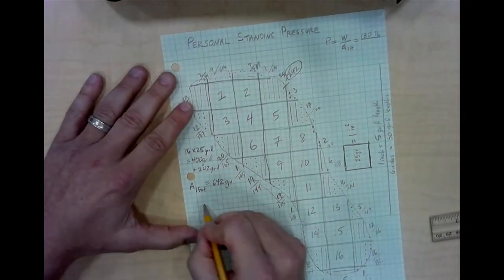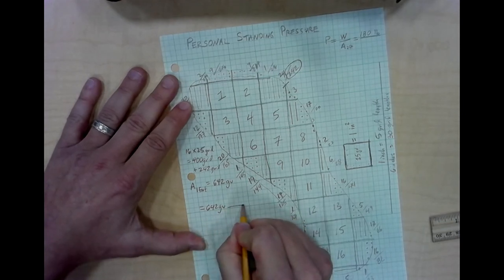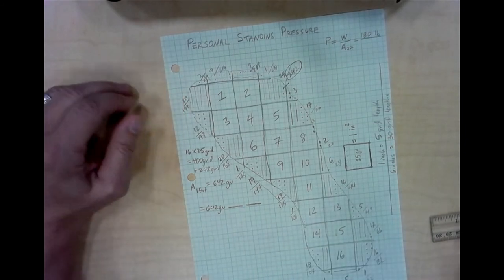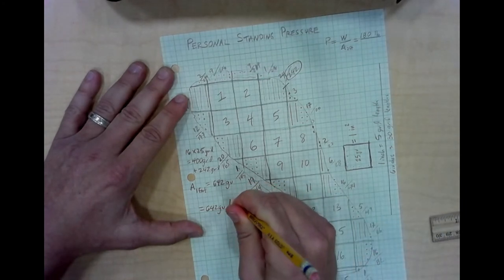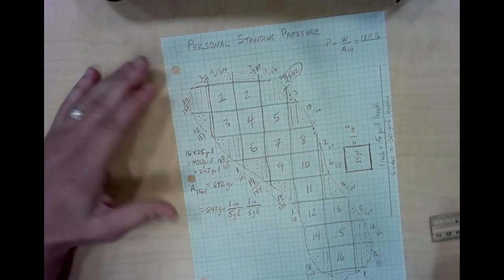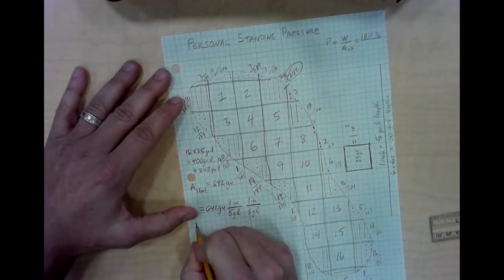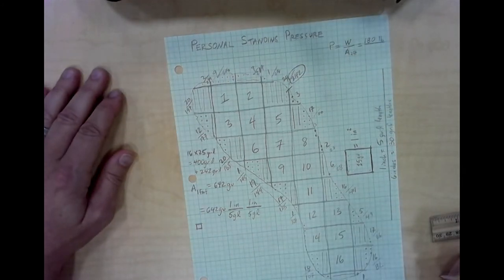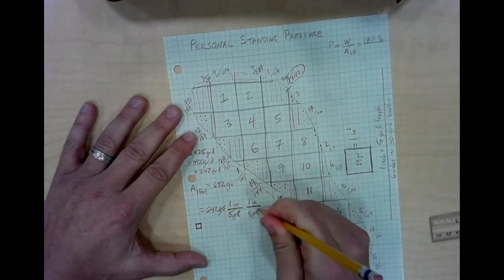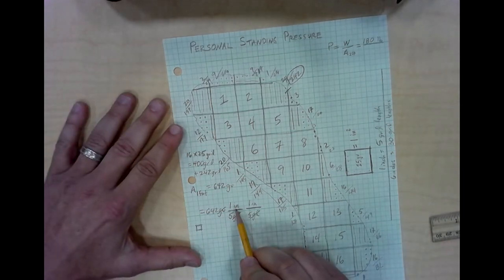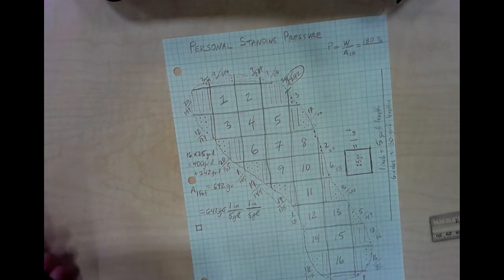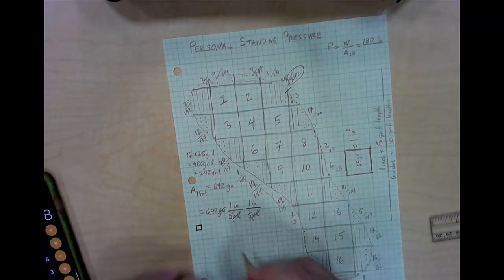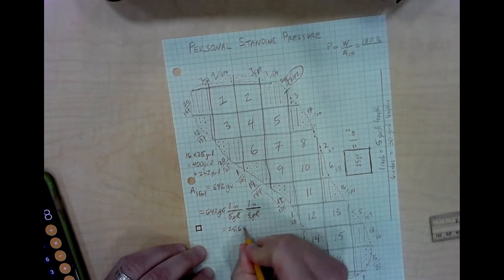So I'll take my area of 1 foot, 642 grid units, and I'm going to go ahead and convert it. I'm going to actually use my two linear conversions and recognize that 5 grid lengths is 1 inch and 5 grid lengths is 1 inch. And recognize that a grid length times a grid length is 1 grid unit. So that will allow me to cancel out a grid unit with a grid length times a grid length. And that will give me my answer in inches squared. So now I simply need to do the math, 642 divided by 5, divided by 5. And that will actually give me a value of 25.68 square inches.